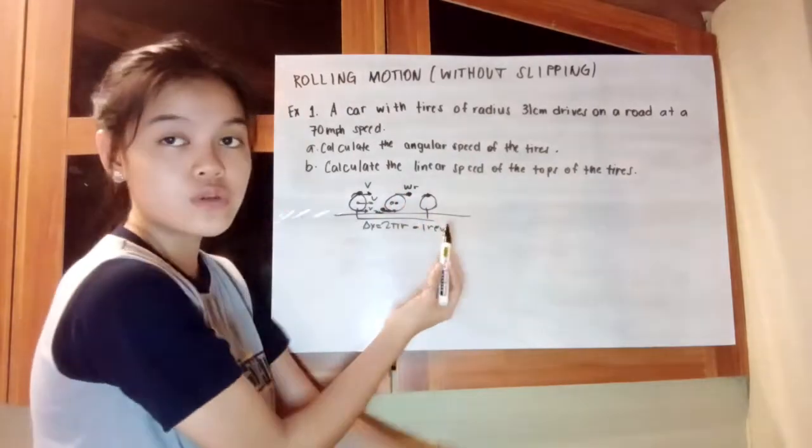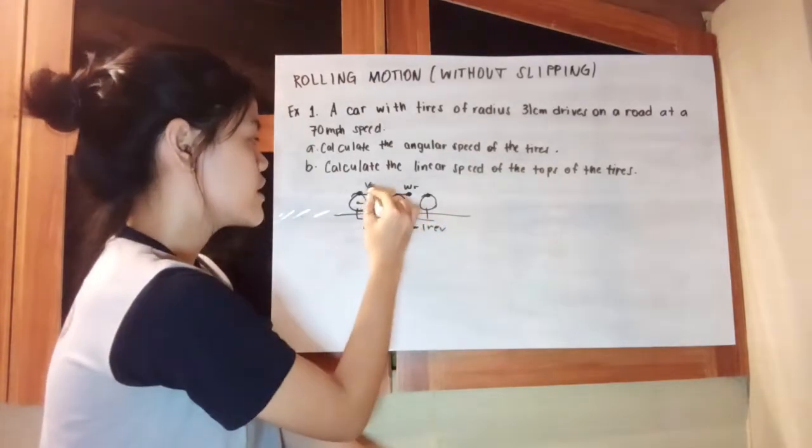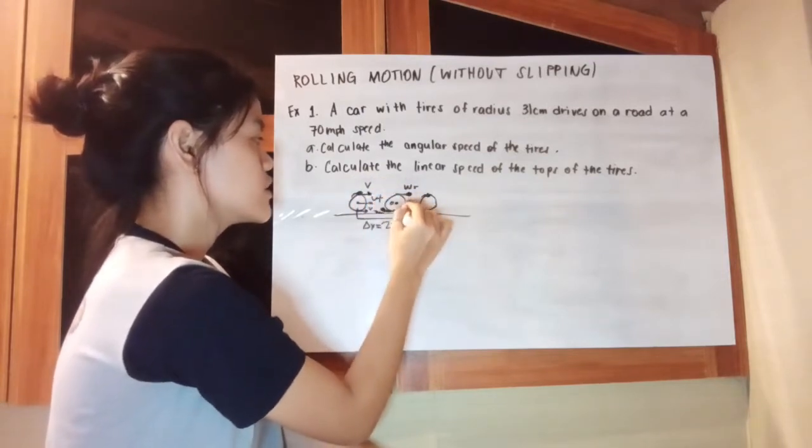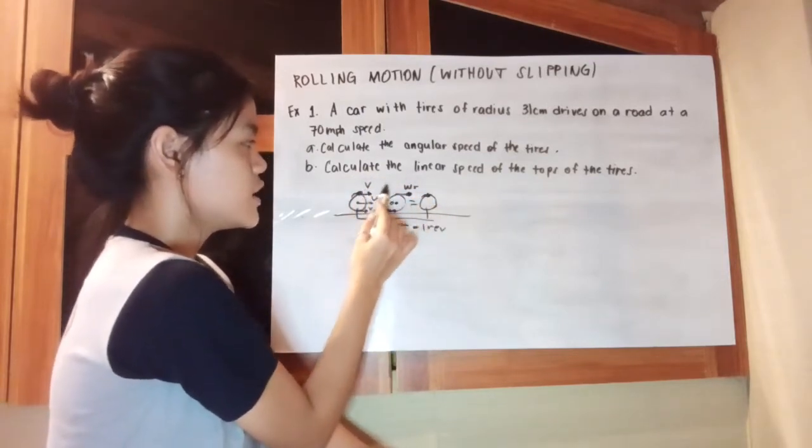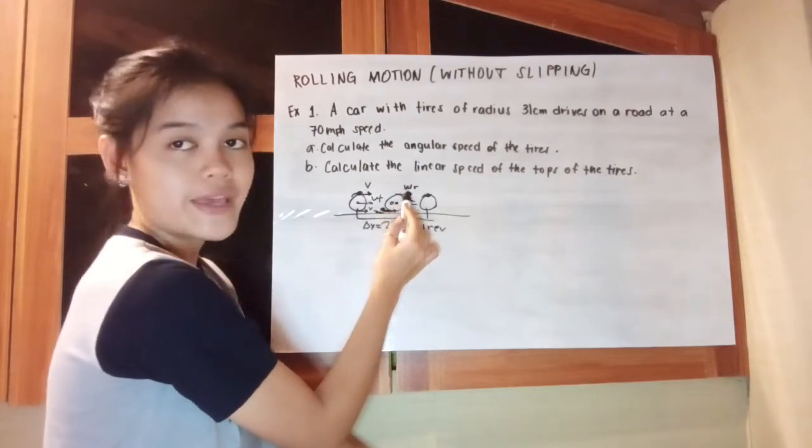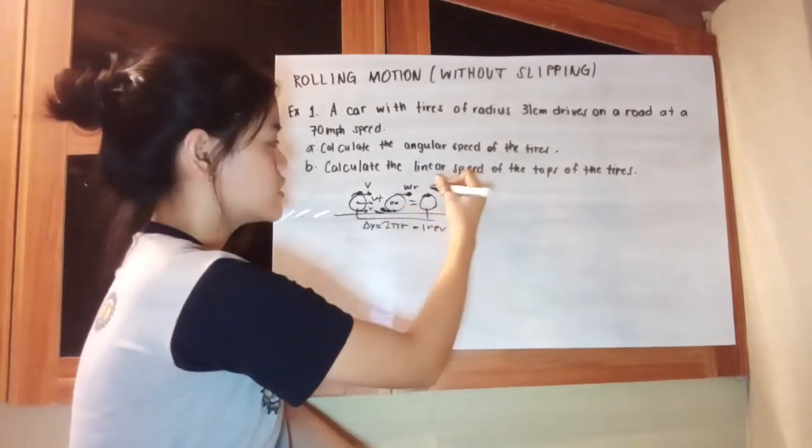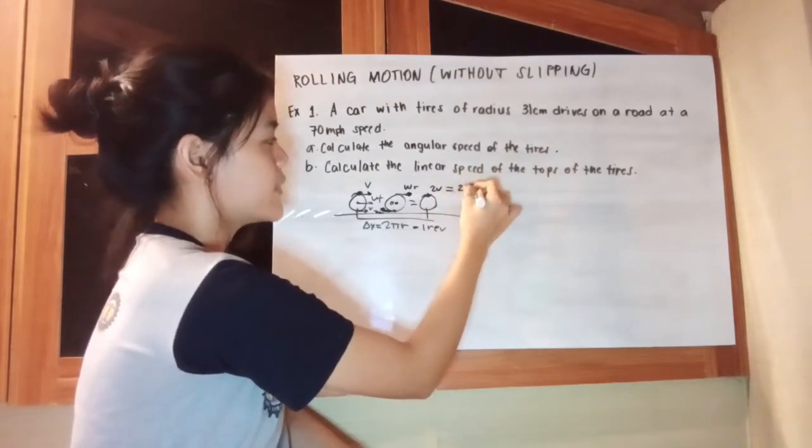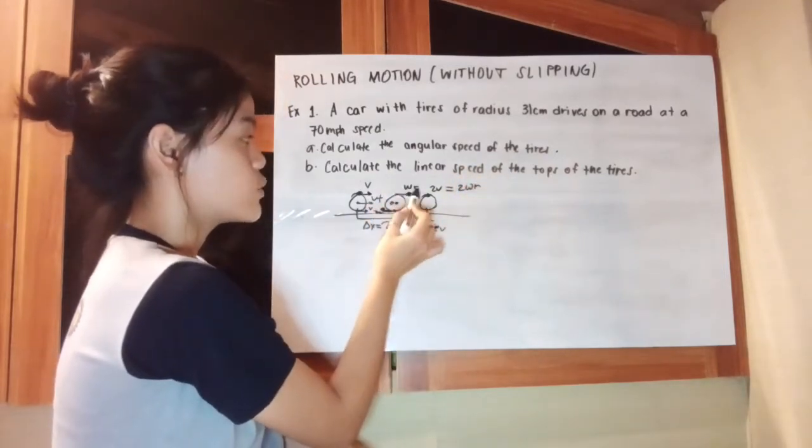For the third figure, we can compute that by adding this first figure and this second one. V plus ωr is equivalent to just 2v and is also equivalent to 2ωr because they are equal to each other.